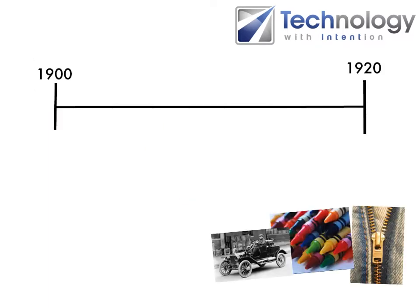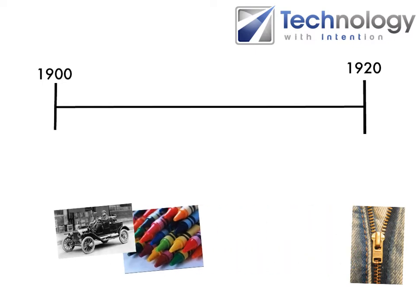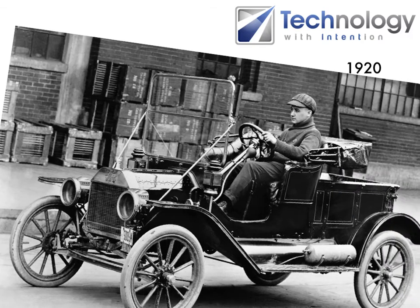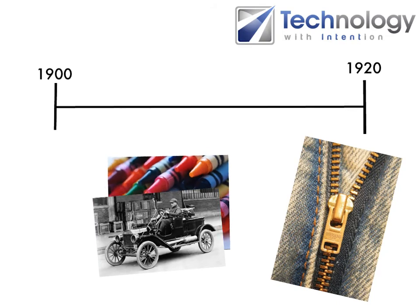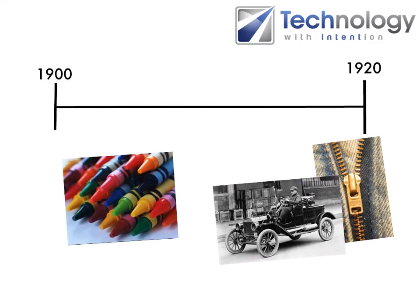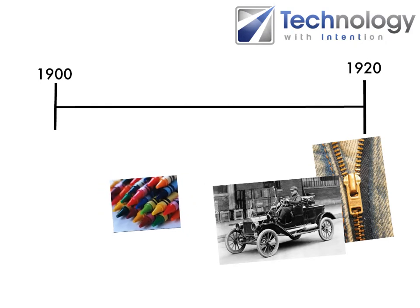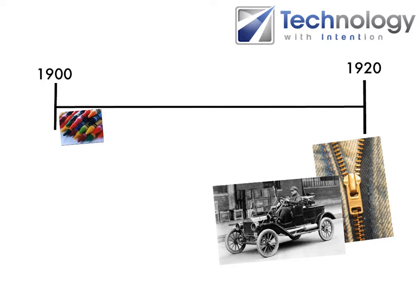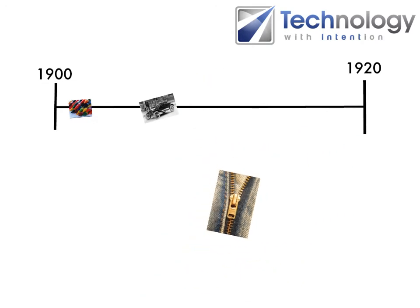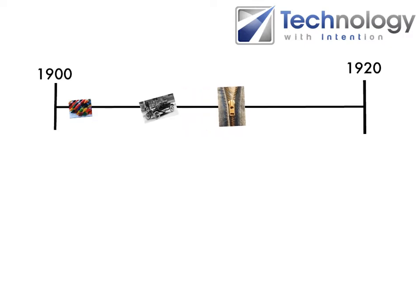Flipped instruction in a history class — this is a lot of fun. People do this with smart boards all the time. I've got three inventions and I'm talking to students about when they were invented: the Model T, crayons invented in the early 1900s, and zippers. Using the audio and visual capabilities of screencasting — crayons, 1903, placed on the timeline; Model T first sold in 1908; zipper invented in 1913, although not patented until much later. Students can play with this, discuss it, record the results, and turn in the finished product.